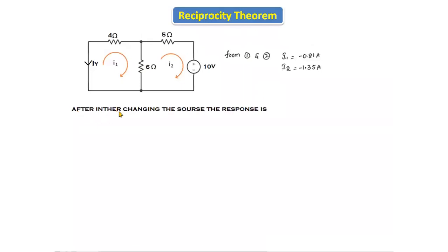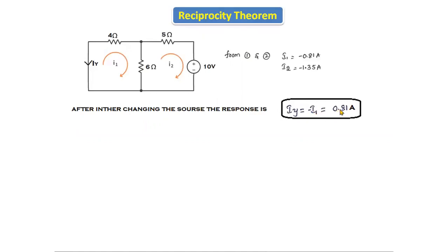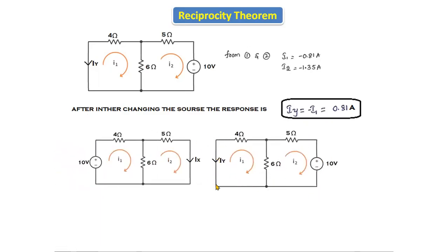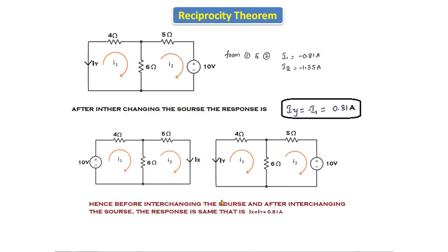After interchanging the source, the response Iy equals the magnitude of I1, which is 0.81 amperes. Since the I1 current direction is clockwise and Iy is taken in the opposite direction, Iy equals minus of I1, giving 0.81 amperes. Before interchanging the source, Ix equals 0.81 amperes, and after interchanging the source, Iy equals 0.81 amperes — the response is the same.